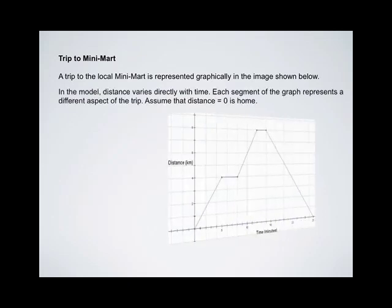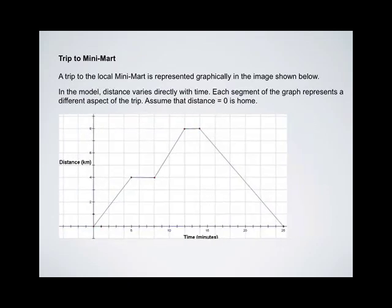Trip to Minimart. A trip to the local Minimart is represented graphically in the image shown below. In the model, distance varies directly with time. Each segment of the graph represents a different aspect of the trip. Assume that when distance equals zero, or when there's no vertical change, he is home.